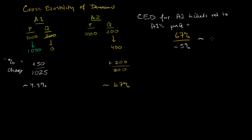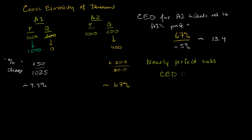Doing the math: 67% divided by 5% gives us roughly 13.4. So we have a very high cross elasticity of demand. This is because these two airlines are near perfect substitutes — people don't care which one they take, they just go for the cheapest one. When you have nearly perfect substitutes, the cross elasticity of demand approaches infinity.